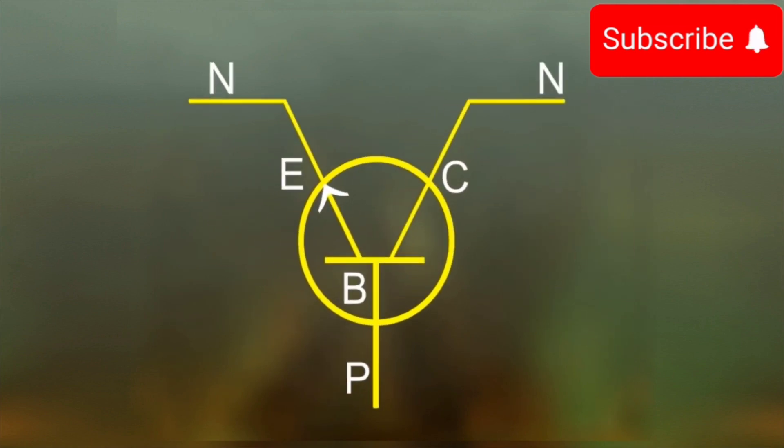For the N-type emitter, the arrow head points from P-type base to the N-type emitter.